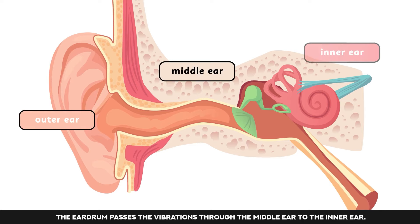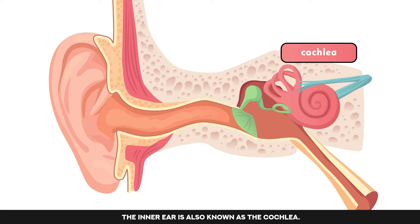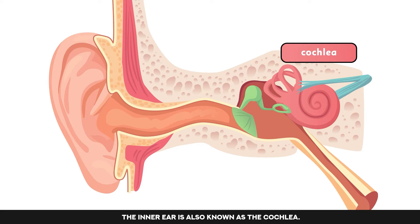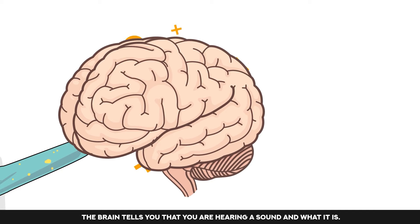The eardrum passes the vibrations through the middle ear to the inner ear, also known as the cochlea. Here, there are thousands of tiny hair cells. They change the vibrations into electrical signals, which are then sent to the brain via the hearing nerve.